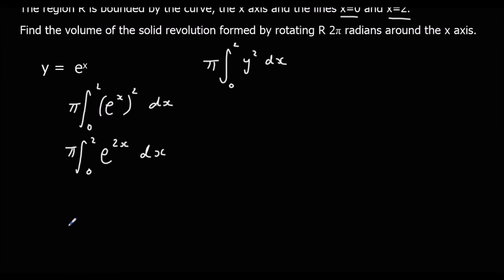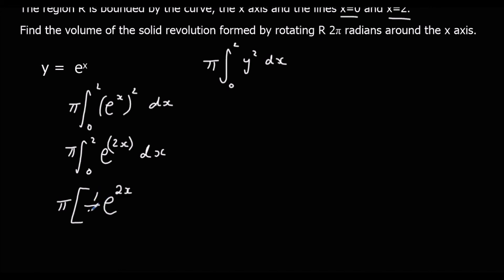So we can integrate it now. Integrating e to the power of 2x: when we integrate e it stays the same, but we divide by the bracket differentiated using the reverse chain rule. The bracket differentiates to 2, so we divide by 2, giving us a half. So we've got π times half e to the power of 2x, between 2 and 0.